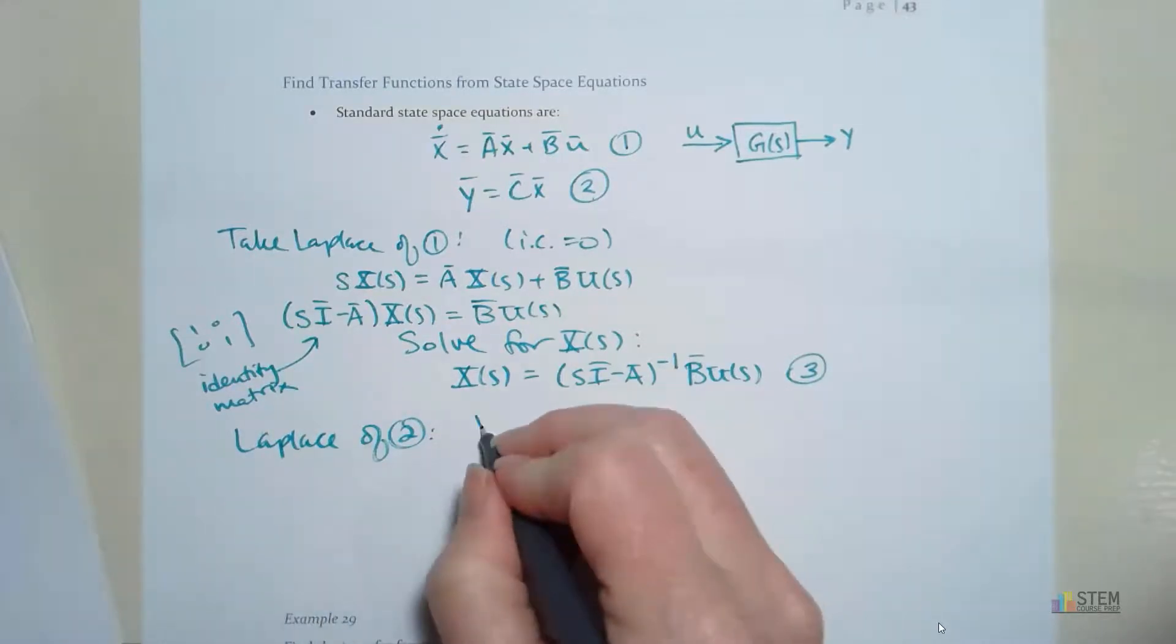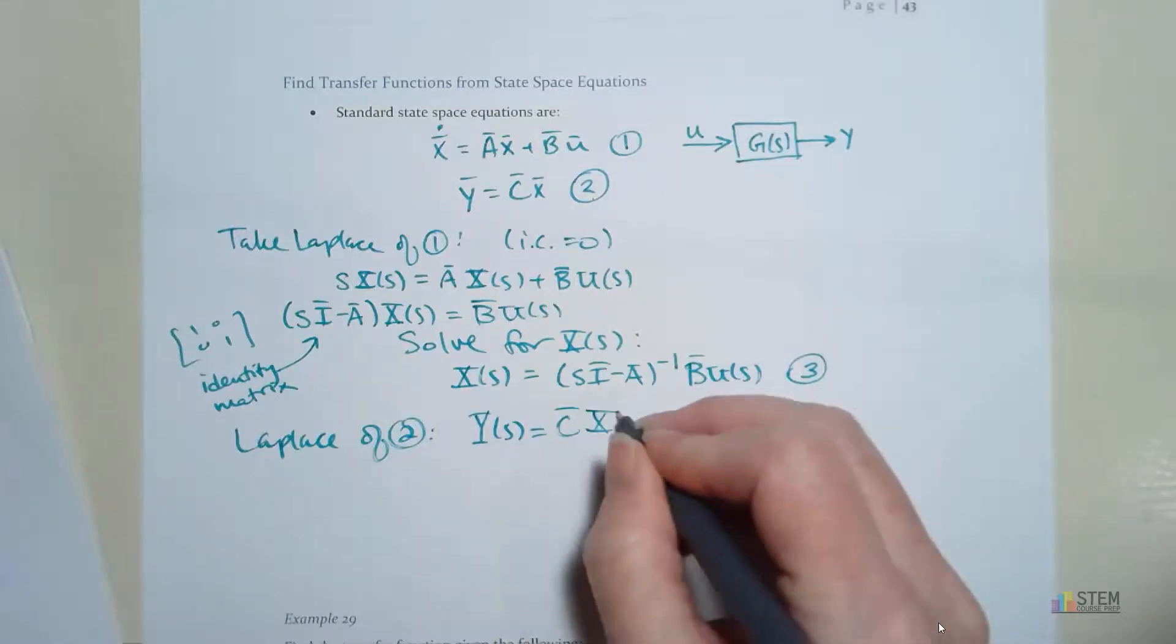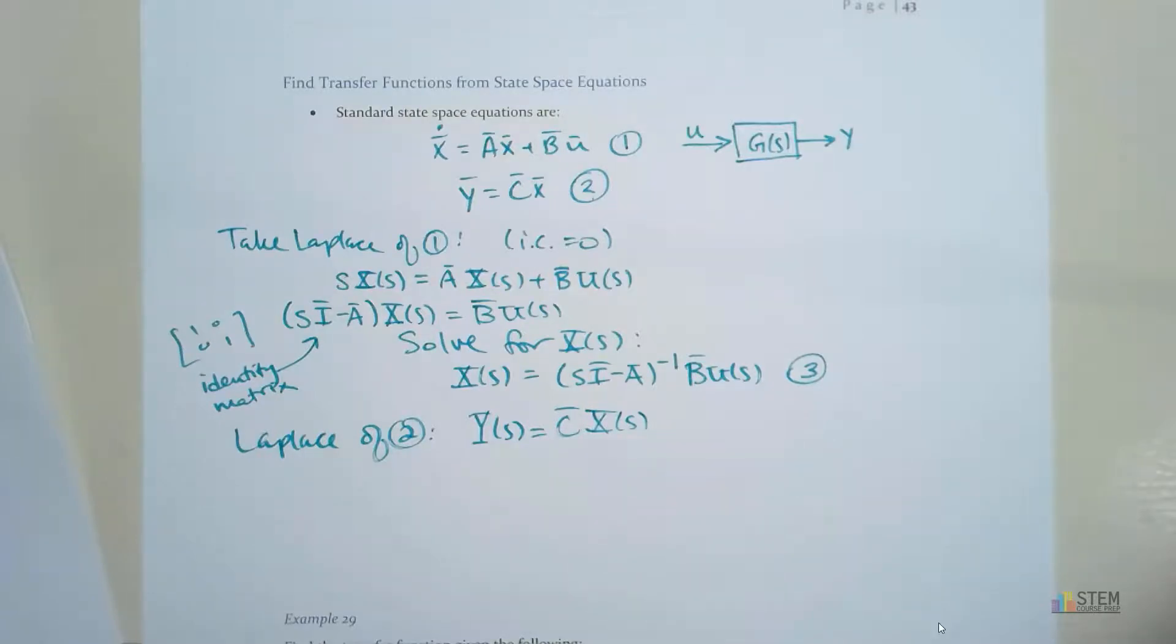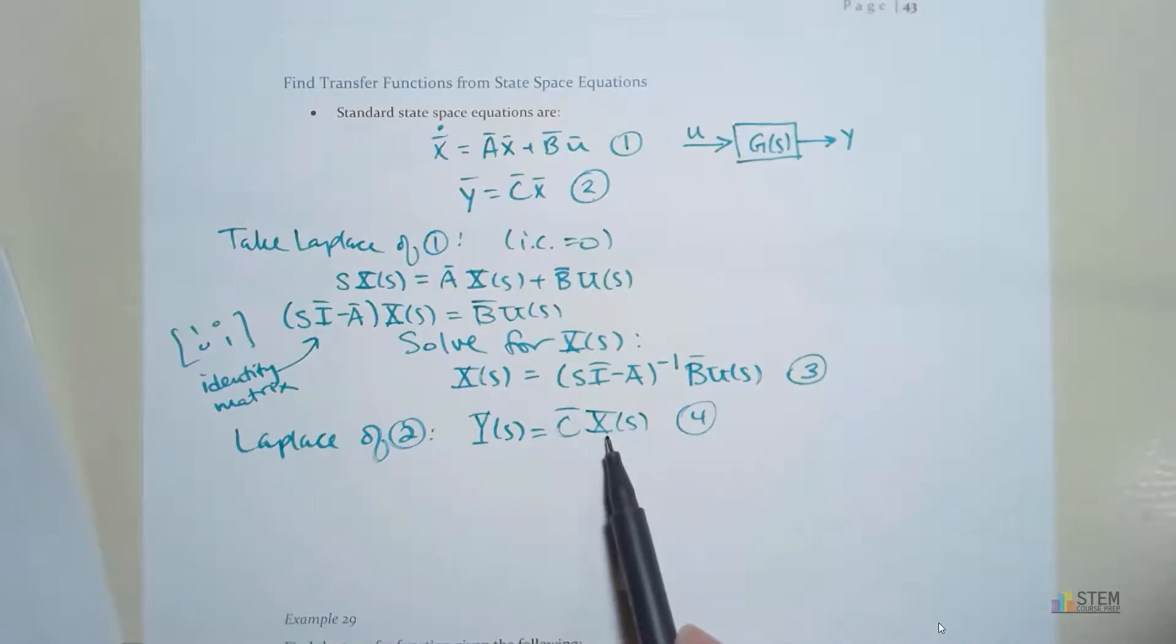We're going to get Y of S equals C times X of S. Now notice let's call it 4. Notice what we have here. We've got X. Okay.